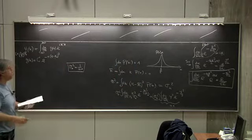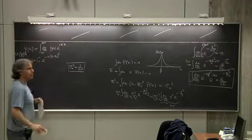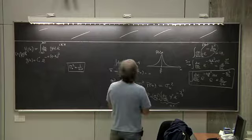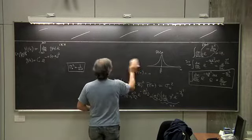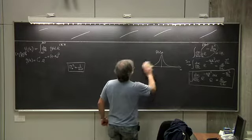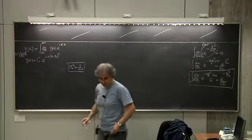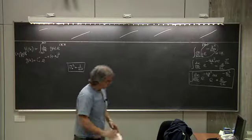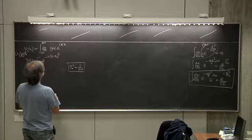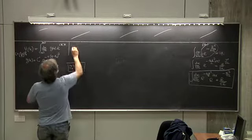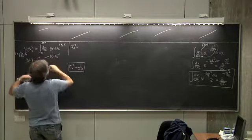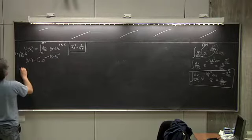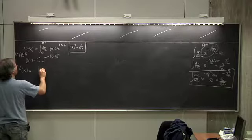That's the end of the general mathematics. Now let us approach our calculation. Sigma k squared is one over four alpha — the width of g in k space squared. Let us now calculate psi of x: the integral over dk over square root of two pi.